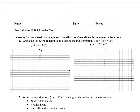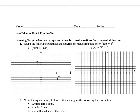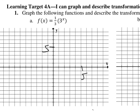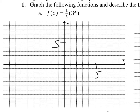We've got to graph this. So we've got to find some points here. We know that three to the x normally goes through zero, one. However, this one-third is going to make you go one-third of that. It's going to go through one-third there. And then three to the first is usually three, but we're going to drop that down one-third. Three to the second is usually nine, but a third of nine is three.